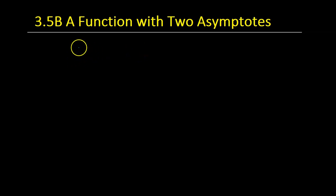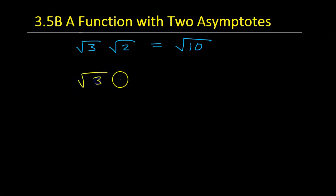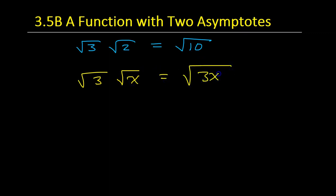For example, please remember that if I do the square root of 3 times the square root of 2, this is allowed — it will simply give me the square root of 6. Similarly, if I did the square root of 3 times the square root of x, that's just going to give me the square root of 3x. So if you have two radicals, you can go ahead and do this multiplication.